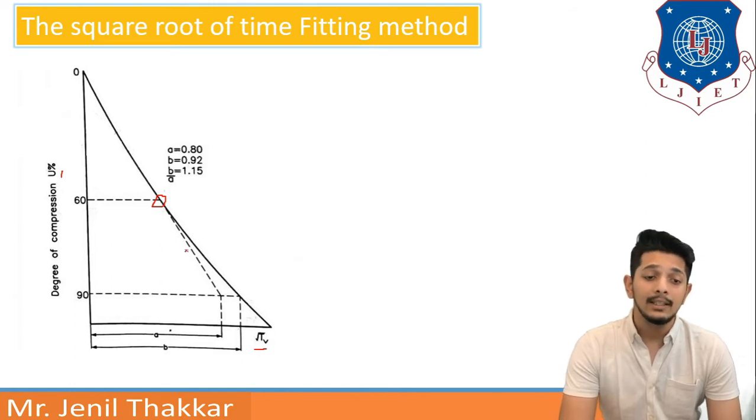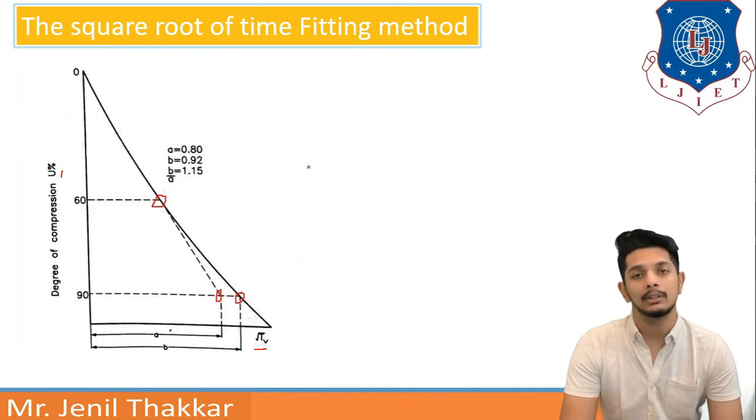If I extend this linear graph upto here and give it a name a the width a and actual graph widths as b and compare them so b by a is coming 1.50. In simple words it means if the graph is not linear it is 1.15 times then the linear value at 90 percentage.